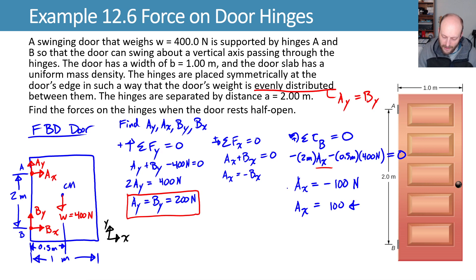Let's go ahead and come back in here and substitute this and say that, okay, BX is equal to negative AX or BX is equal to negative negative 100, which gives us a positive 100 newtons. Lovely. Which is to the right.